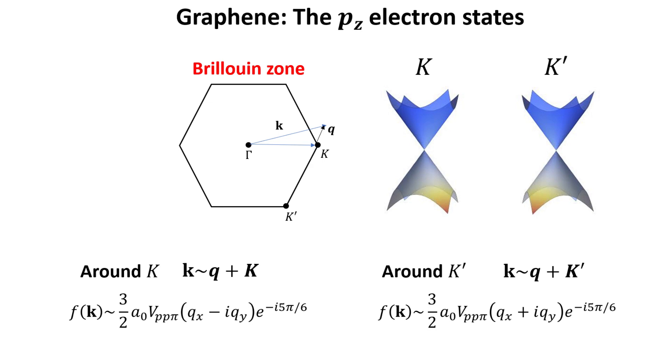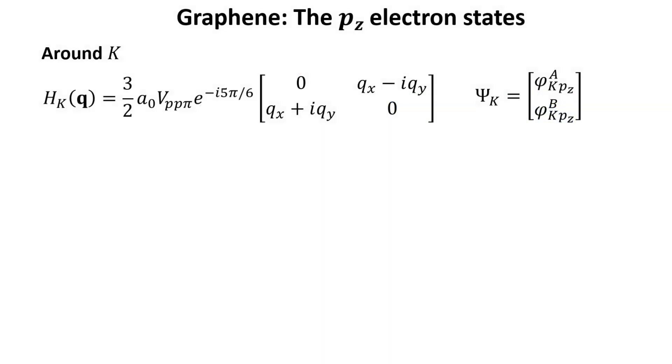Hence the structure factors can be approximated as shown around the K and K prime points. Recall that a_0 is the distance between two carbon atoms in the honeycomb structure of graphene. Therefore the two by two matrix Hamiltonian for pz states in graphene can be approximated as shown for momenta around the K point.